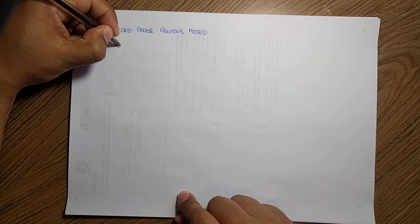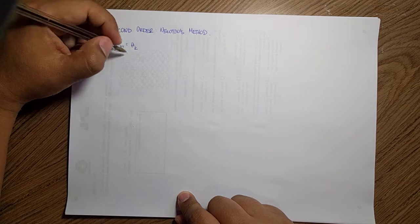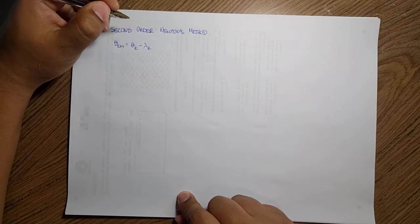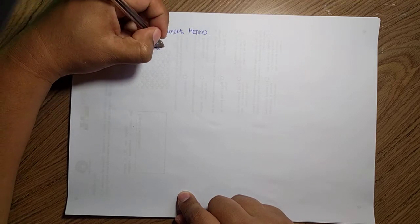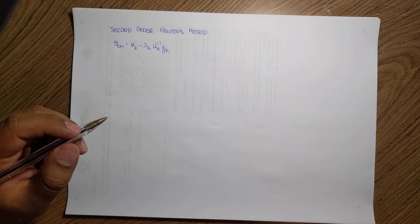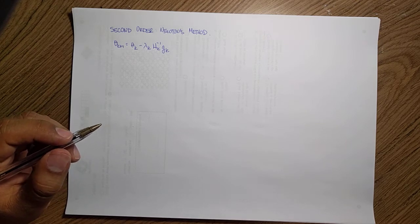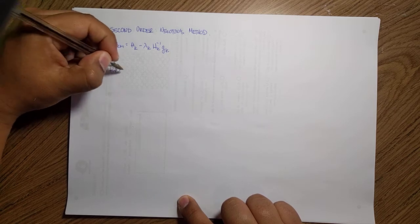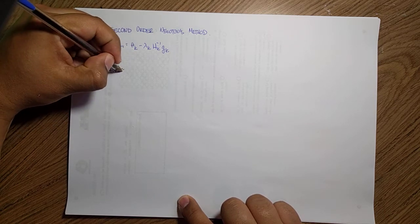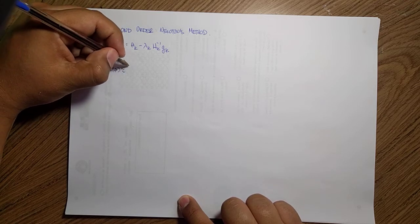Basically we want to use the Hessian, and that's why we were computing that before. Our parameter update is just taking the previous step and then updating it using some learning rate times the gradient. In this case we are going to add the Hessian and the second order information. This is just a derivation that comes from using the second order Taylor series — we can approximate any function f of theta using a Taylor series approximation, which just adds the second derivative on top of the approximation.